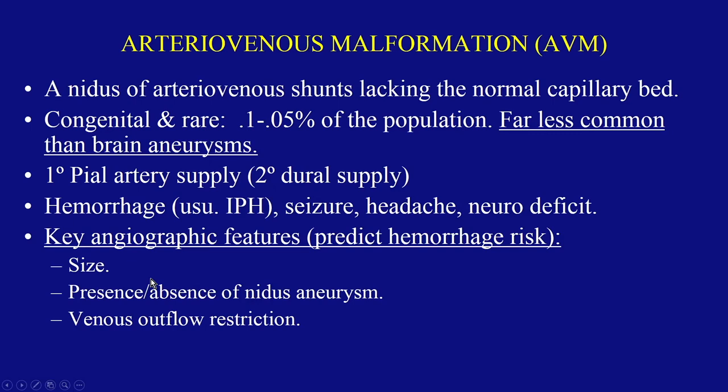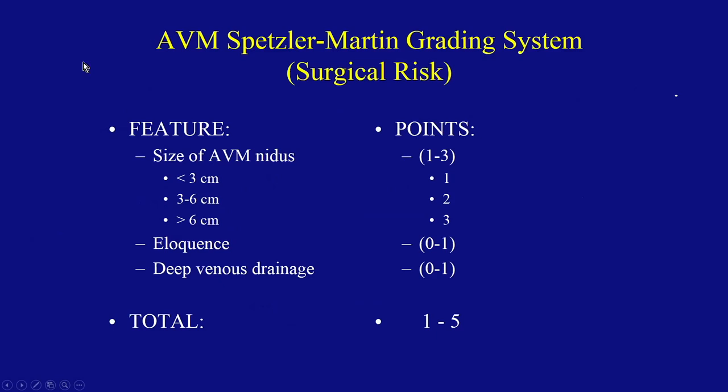Size predicts hemorrhage risk, as does the presence of aneurysm and venous outflow restriction. These factors have been used by Spetzler and Martin to come up with a grading system for surgical risk. It's quite straightforward — you get points for size, one to three as shown here. Eloquence refers to whether it's in a part of the brain such as the motor strip where surgery would be devastating, or perhaps the right frontal lobe where surgery might be a better option. Deep venous drainage is more ominous than superficial venous drainage, and you can score between one and five.